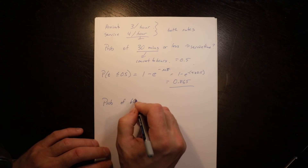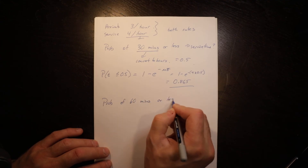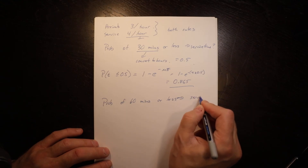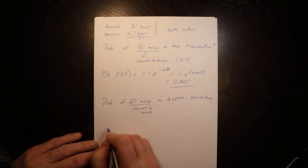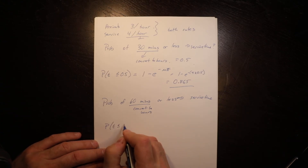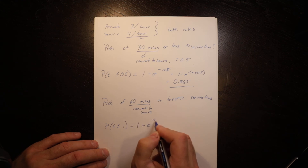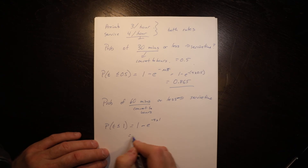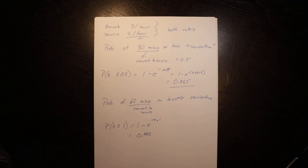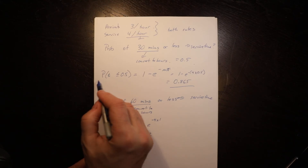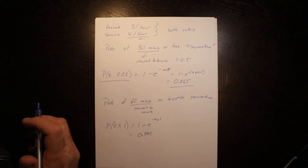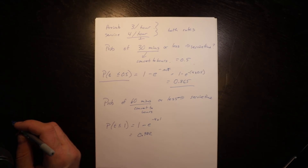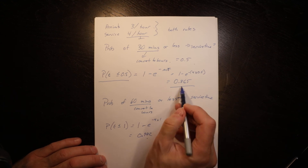Next question: probability of 60 minutes or less. Converting to hours gives T equals 1.0. Applying the same formula: one minus e to the negative (4 × 1) equals 0.98, so 98% of the time the service will take an hour or less. Remember this is a cumulative distribution function — it means up to and including one hour, which is why this number is larger than the previous one.